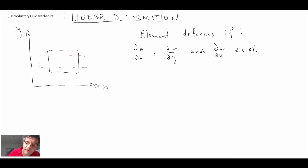And so it turns out that the element will deform if partial u partial x, partial v partial y, or partial w partial z exist. And these represent the strain rates, longitudinal strain rates, in the principal directions of our coordinate system.